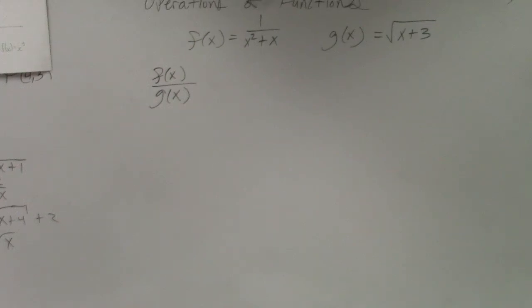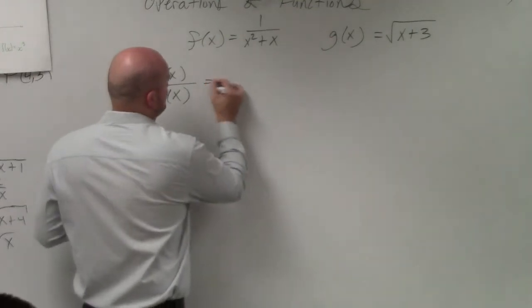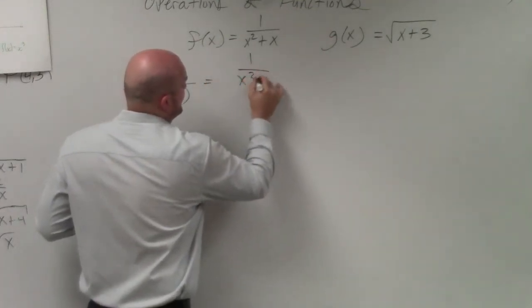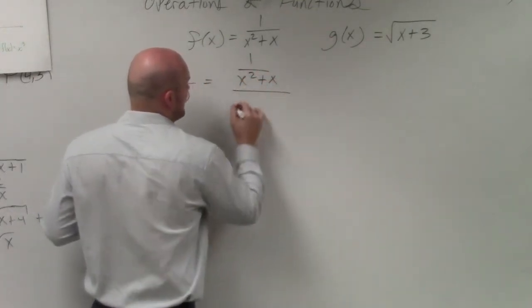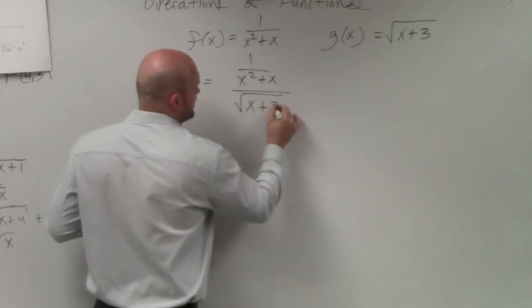Now we're doing division. Again, the same thing: 1 over x squared plus x divided by the square root of x plus 3.